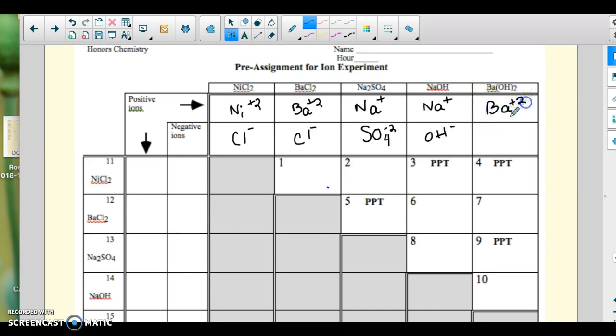So here we have barium. Here we have hydroxide. And then we get over here, and we do similarly.